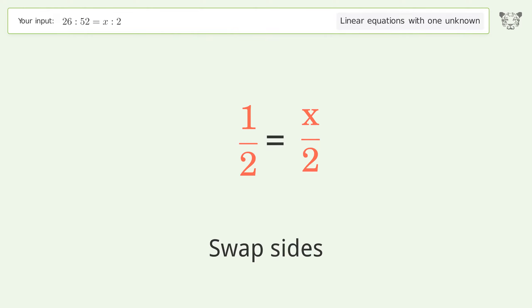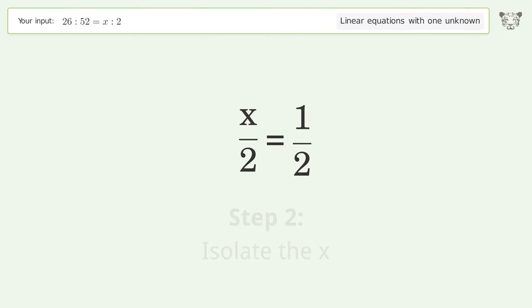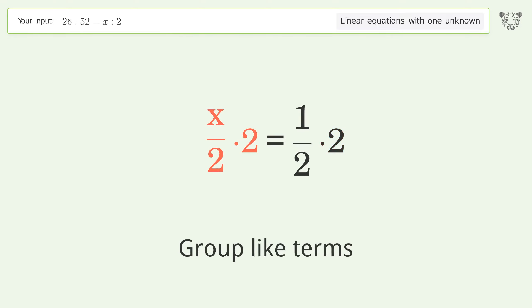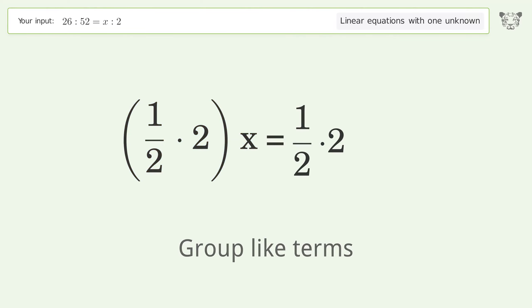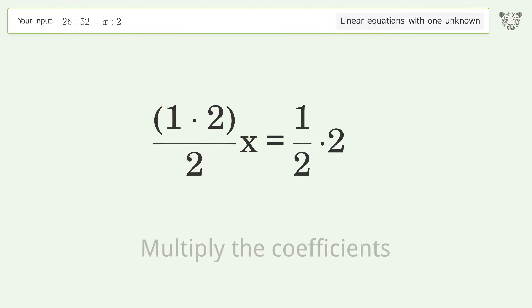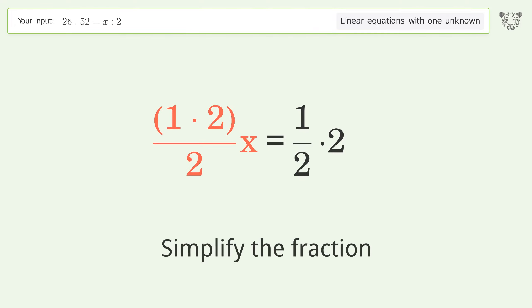Cancel the greatest common factor, swap sides, isolate the x, and multiply both sides by two. Group like terms, then multiply the coefficients.